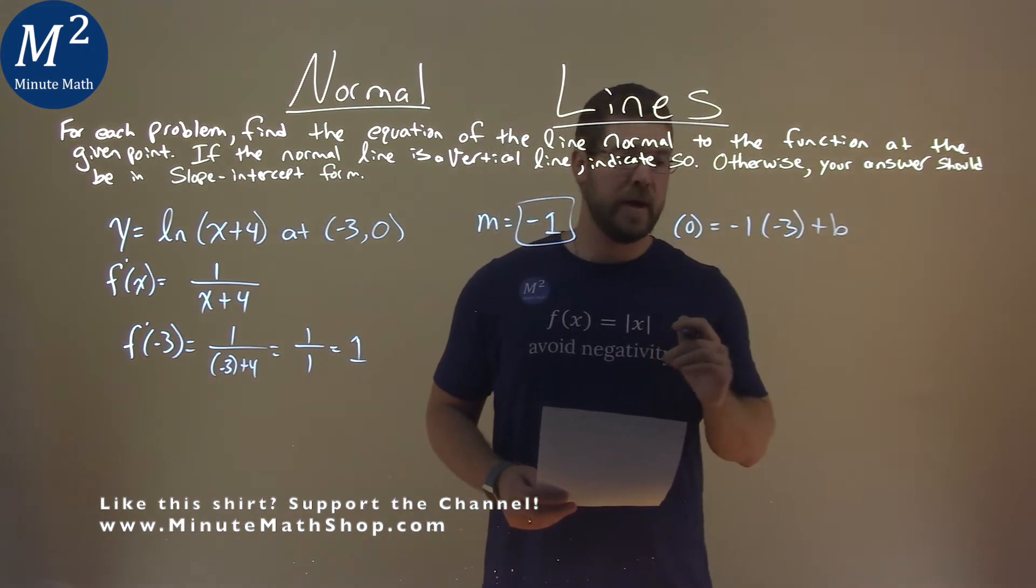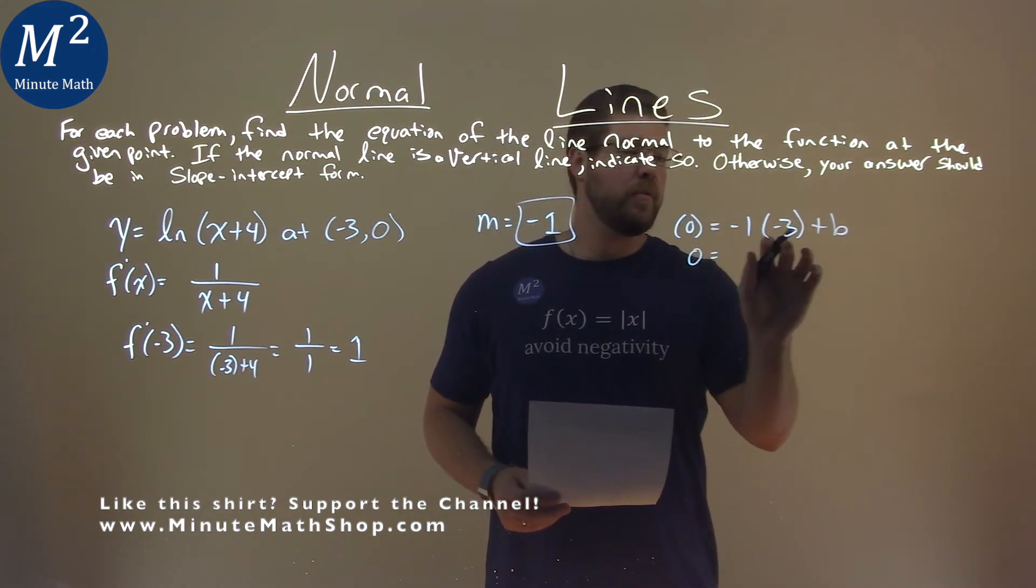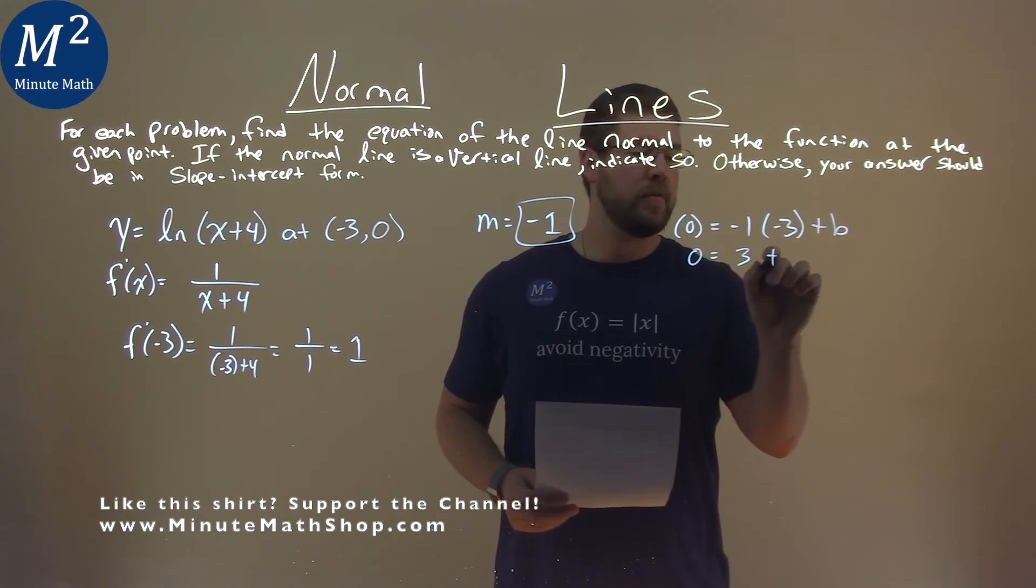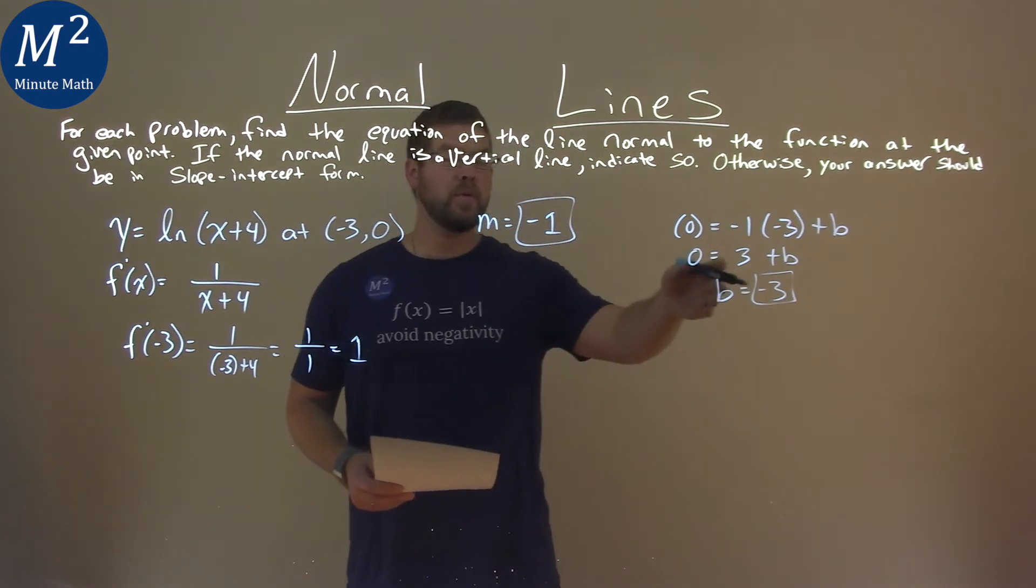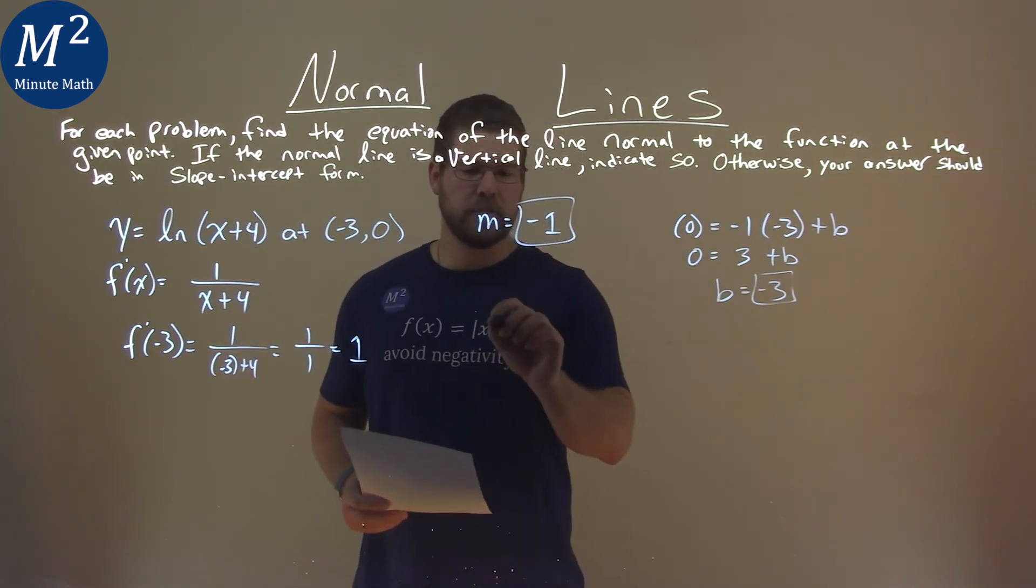Solving for b here now, we have 0 equals negative 1 times a negative 3, positive 3 plus b. And so b equals a negative 3. We have our slope. We have our y-intercept. We can get the equation of the line.